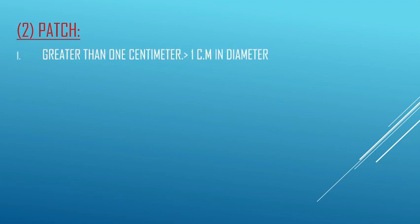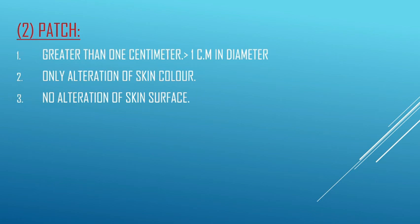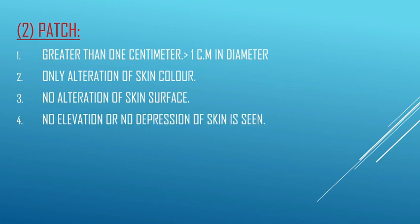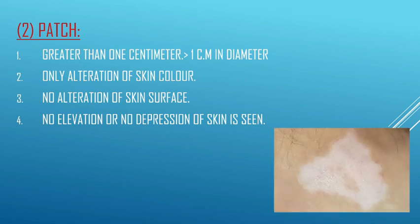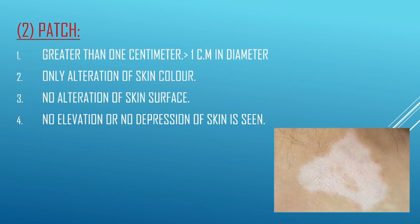The next primary lesion is the patch. A patch is essentially a macule that is greater than 1 centimeter in diameter. It has all the qualities of a macule except for a larger size. So its characteristics are: greater than 1 centimeter in diameter, only alteration of skin color is seen, no alteration of skin surface, and no elevation or depression of skin. A macule larger than 1 centimeter is called a patch, and it can be hyperpigmented or hypopigmented.